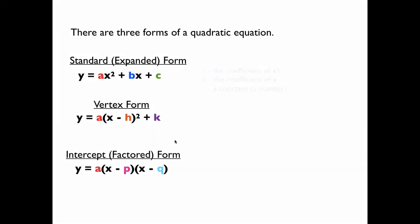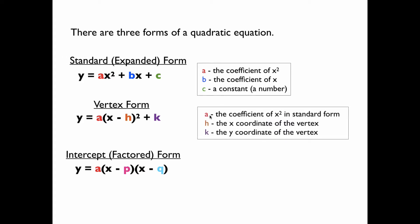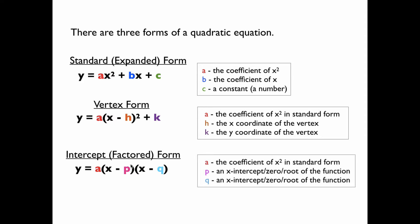Each form has its uses. In standard form, a is the coefficient of x squared, b is the coefficient of x, and c is a constant. In vertex form, a is the same value as the a in standard form. The h in vertex form represents the x-coordinate of the vertex of the function, and k represents the y-coordinate of the vertex. In intercept form, a is the same a as in standard form, and the values of p and q give you the x-intercepts, or the zeros, sometimes called the roots of the function.